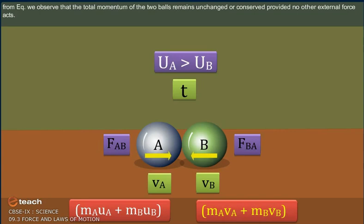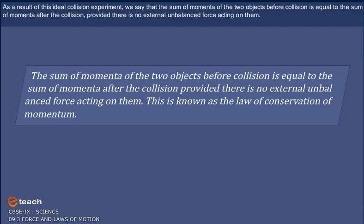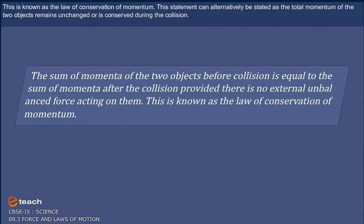From the equation, we observe that the total momentum of the two balls remains unchanged or conserved, provided no other external force acts. As a result of this collision experiment, we say that the sum of momenta of the two objects before collision is equal to the sum of momenta after the collision, provided there is no external unbalanced force acting upon them. This is known as the law of conservation of momentum.